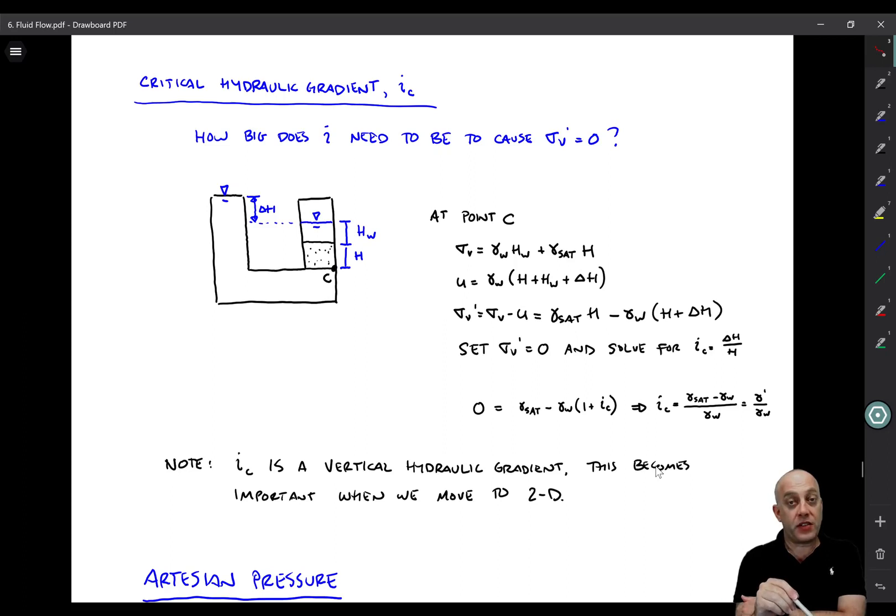So I sub C is a vertical hydraulic gradient. It's important to remember that. And further, it's an upward vertical hydraulic gradient. It's possible to have a downward vertical hydraulic gradient if you're forcing water down into the soil. But that's going to actually increase the effective stress because the seepage force is acting down in the direction of gravity. What we're worried about is whether the upward vertical hydraulic gradient is bigger than I sub C. That's a condition that we need to worry about.